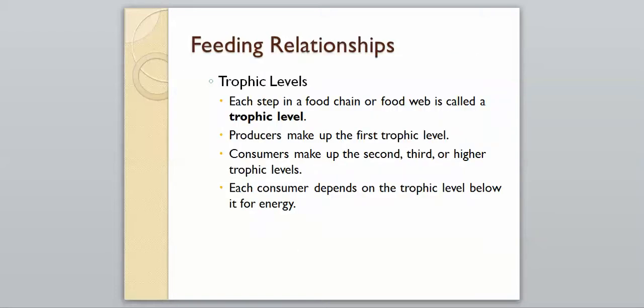Trophic levels are going to be something important you're going to need to know. Each step in a food chain or food web is called a trophic level. Producers make up our first trophic level. Since they're at the first step, they're our first trophic level. Consumers make up our second, third, and continuing on, depending on how many levels we go up, our higher trophic levels. Each consumer depends on the trophic level below for its energy. The first trophic level at the bottom is the basis for the energy for everything that is above it.